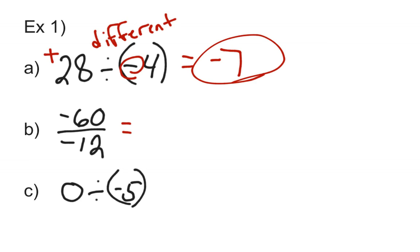Part B, 60 divided by 12 gives me 5. I have a negative 60, a negative 12. The signs are the same. If the signs are the same, we get a positive answer, positive 5.